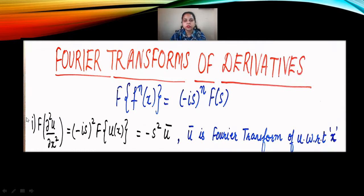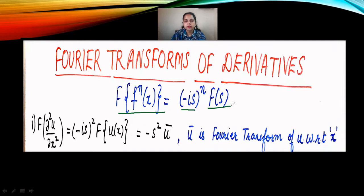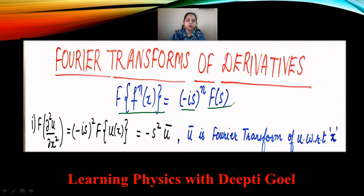Welcome to the new session on Fourier Transforms. In this session, we shall be discussing the Fourier Transforms of the Derivatives and some important results or properties related to the Fourier Transforms of the derivative of functions. We have already studied that if we apply the Fourier Transform on the nth derivative of the function, the result is minus iota s raised to power n into f of s. We have already derived this result in the properties of the Derivative of Fourier Transforms.